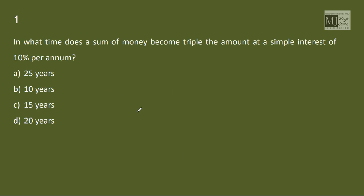In what time does the sum of money become triple the amount at a simple interest of 10% per annum? That means my amount is 3P, P is the principal and we know that amount equals principal plus interest, that means interest in this case is 2P.